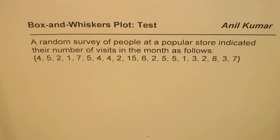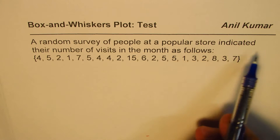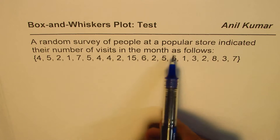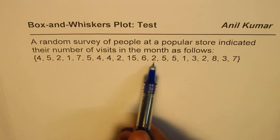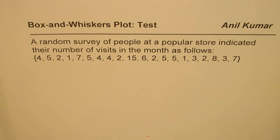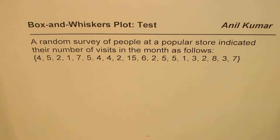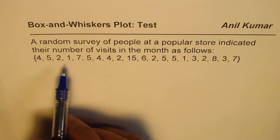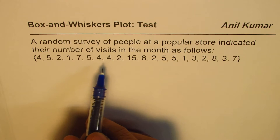I'm Anil Kumar and in this video we will learn how to create a box and whisker plot. Here is a question from a previous test paper: a random survey of people at a popular store indicated their number of visits in the month as follows: 4, 5, 2, 1, 7, 5, 4, 4, 2, 15, 6, 2, 5, 5, 1, 3, 2, 8, 3, 7. We need to plot and analyze this data using a box and whisker diagram.